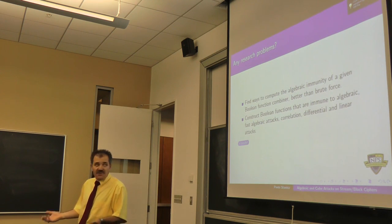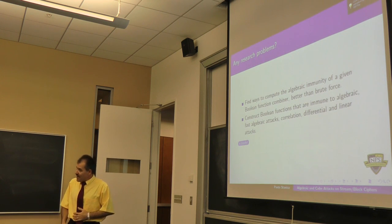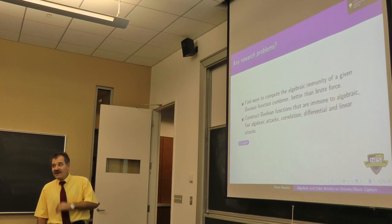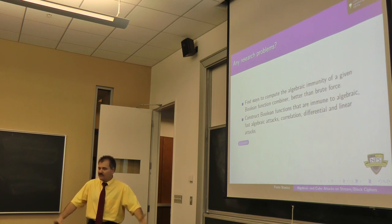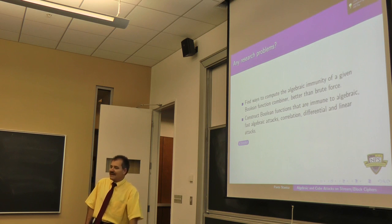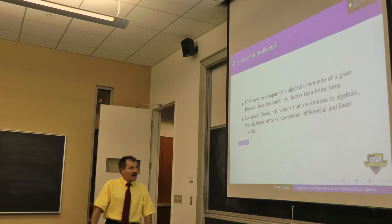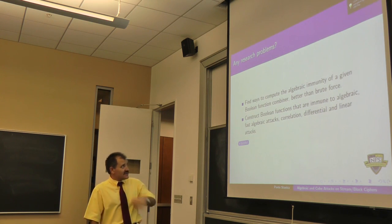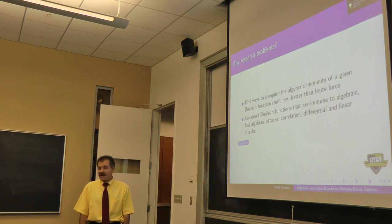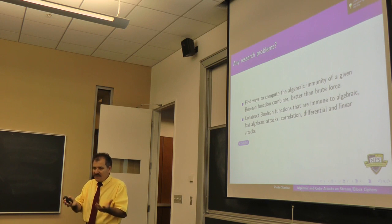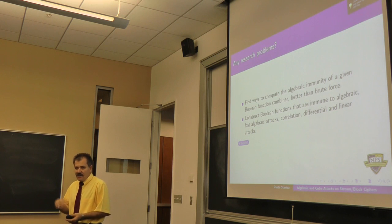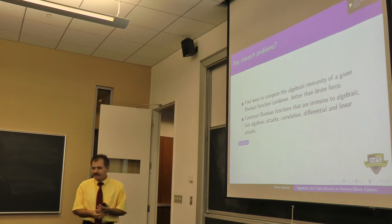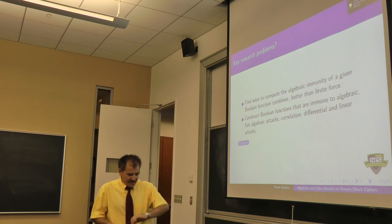Any research problems? Certainly plenty. Find ways to compute the algebraic immunity of a given Boolean function better than brute force. This is not as easy as it sounds. Even to find the algebraic immunity, you still have to solve a system which takes quite a bit. But once you use that combiner for multiple instances, it's important to find an annihilator. Second, construct Boolean functions immune to algebraic, fast algebraic, correlation, differential, and linear attacks. Find large classes like an atlas of such functions with high algebraic immunity, possibly optimum, to be used in stream or block ciphers.